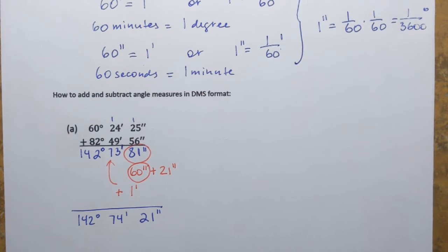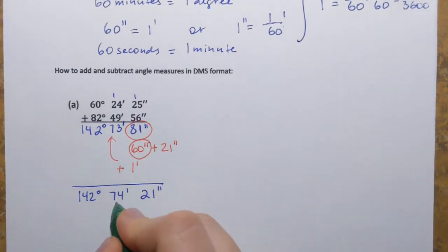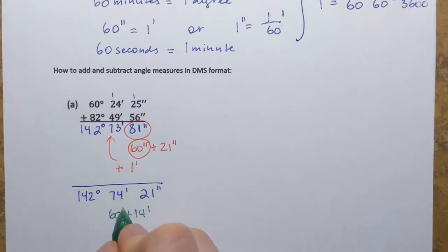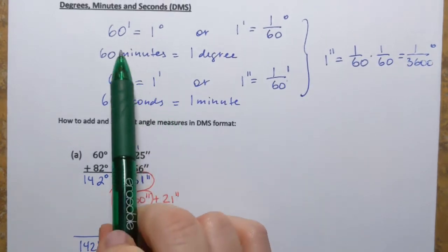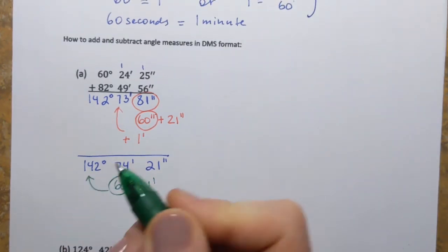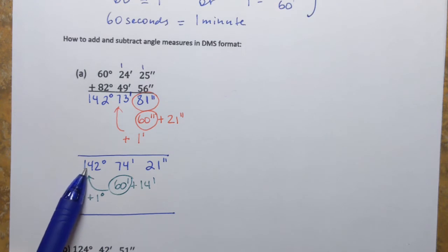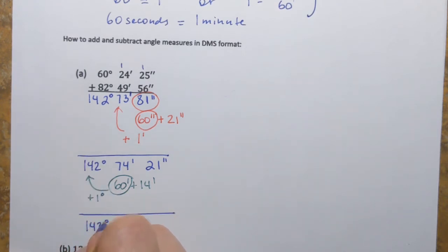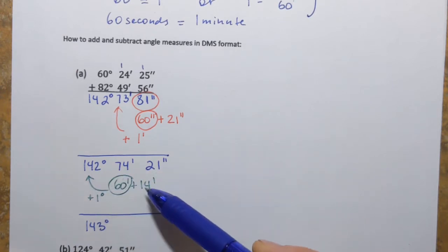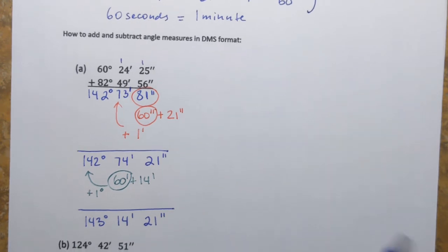Once we handle seconds, we move on to check the minutes. We have 74 minutes, which we split into 60 minutes plus 14 minutes. 60 minutes converts to 1 degree, which we add to the degrees. So the final answer is 143 degrees, 14 minutes, and 21 seconds.